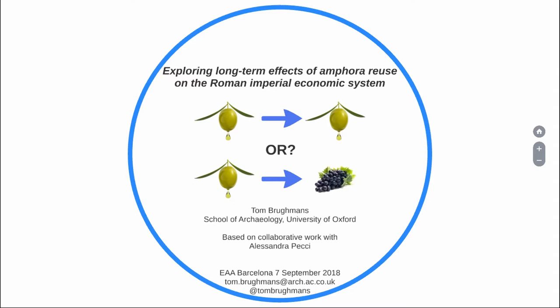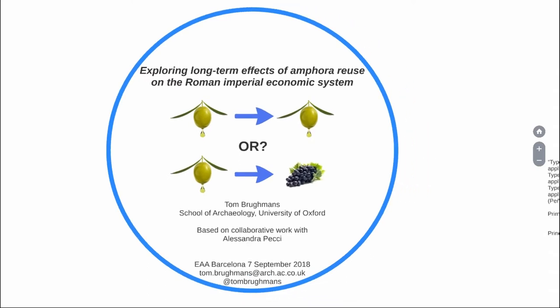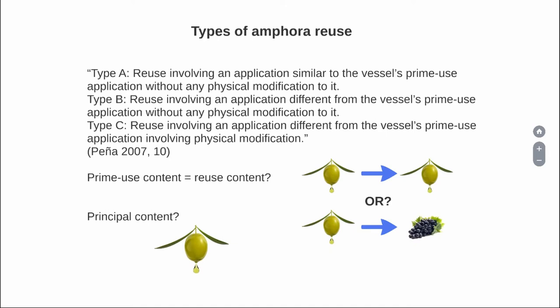Yet those amphorae could be reused. And that fact, at best, has been ignored in Roman studies and, at worst, has been denied that it even happened. So I think we should investigate this issue a little bit more. I'm talking about a very particular type of reuse, defined as type A reuse by Taylor Pena: reuse involving an application similar to the vessel's prime use application without any physical modification to it.